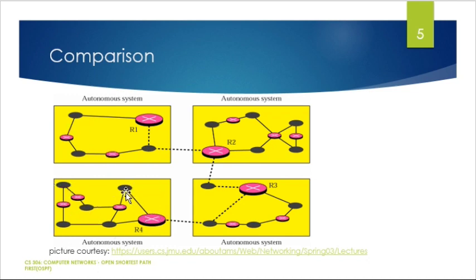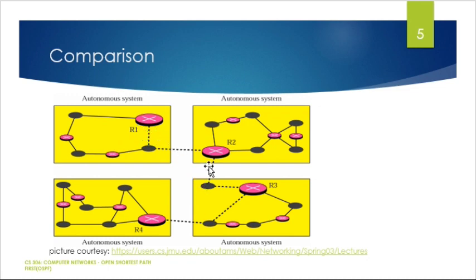Each autonomous system has a major router, linked routers, and some host machines, all linked with each other. Autonomous systems communicate with each other through different routers. A router inside the autonomous system works under intra domain routing. A router operating between autonomous systems is called inter domain routing, as it communicates from one autonomous system to another.